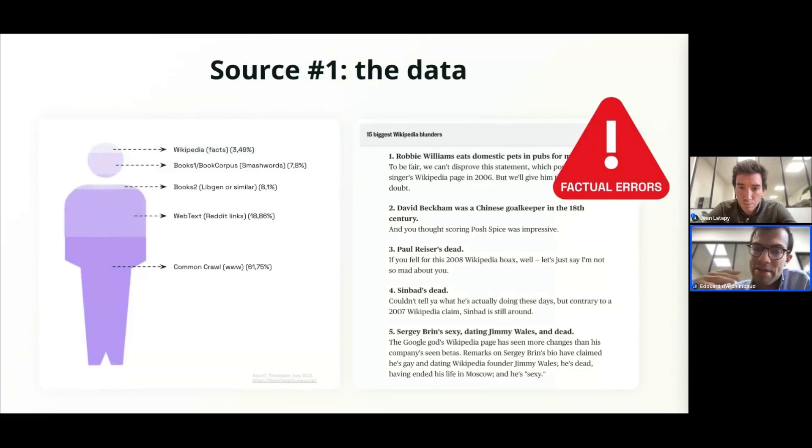There are several mistakes on Wikipedia. And Wikipedia, so here on the right you can see the 15 biggest mistakes that appeared on the historical Wikipedia. And Wikipedia is one of the data sources used by GPT and Trajectory.